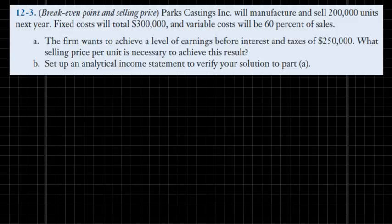Let's go ahead and highlight some key facts provided in this problem. Our company will manufacture and sell 200,000 units next year, and fixed costs are currently totaling $300,000, and variable costs will be 60% of sales. Given these facts and the firm wanting to achieve a level of earnings before interest and taxes of $250,000, what selling price should the company charge in order to achieve its goal?